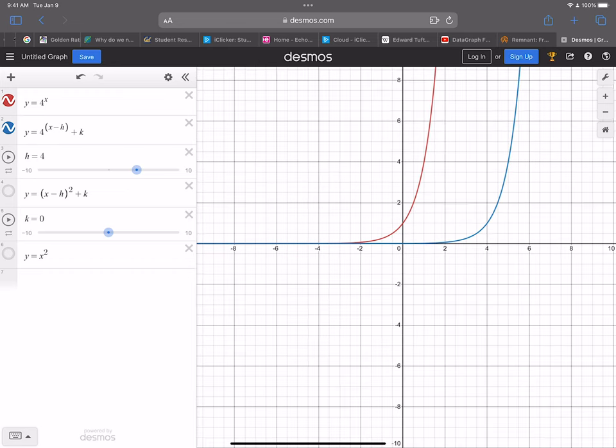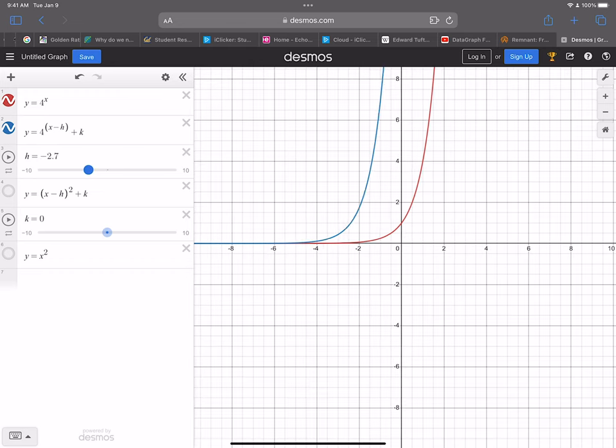And if I slide h back and forth, you'll see this thing have a horizontal translation. There it is negative, so it's a translation to the left. Here it's positive, so it's a translation to the right.